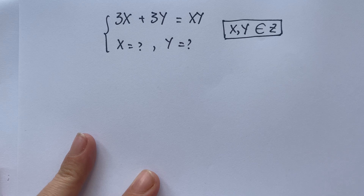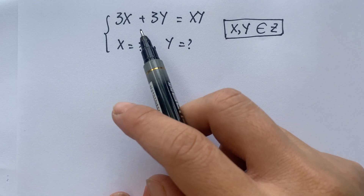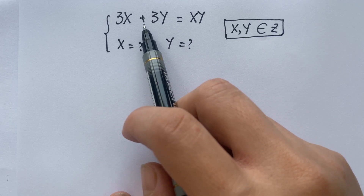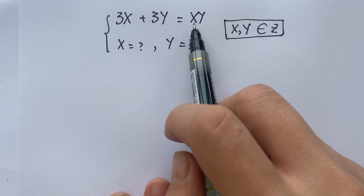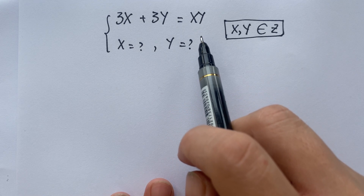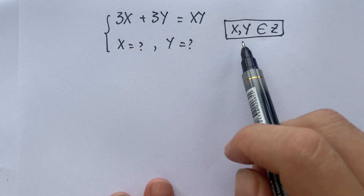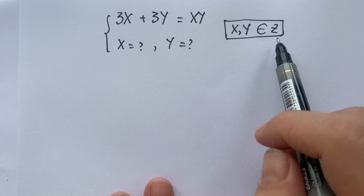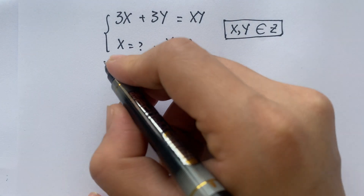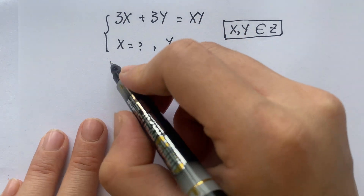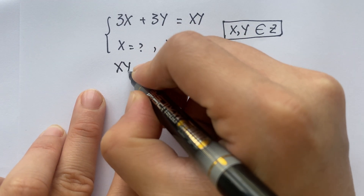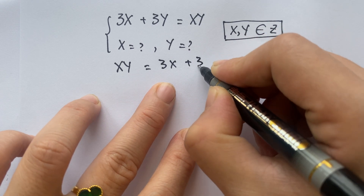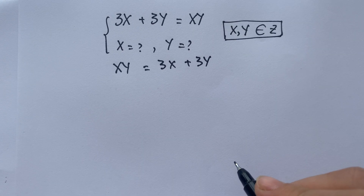Hello everyone! How to find the value of x and y in the equation? Everyone look at that: 3x plus 3y equals xy. And in this case, the requirement here is that x and y belong to the integer numbers. So, everyone can write the equation the same as xy equals 3x plus 3y.